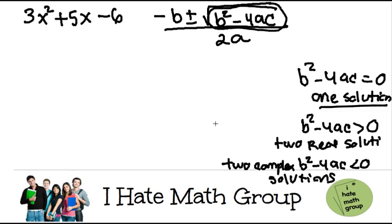All right, so let's go ahead and do it in this problem. The a is going to be the value next to the x squared, so a equals 3. The b is going to be the value next to the x, so b equals 5, and then c equals negative 6.